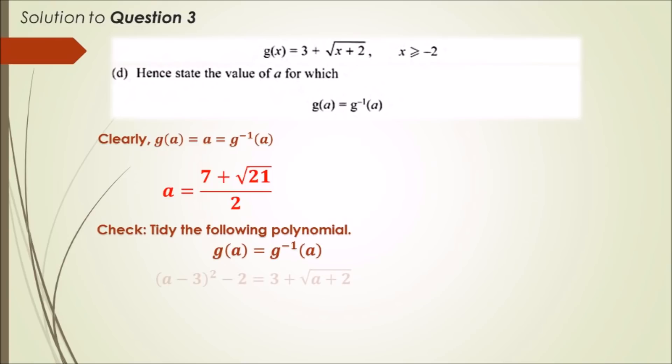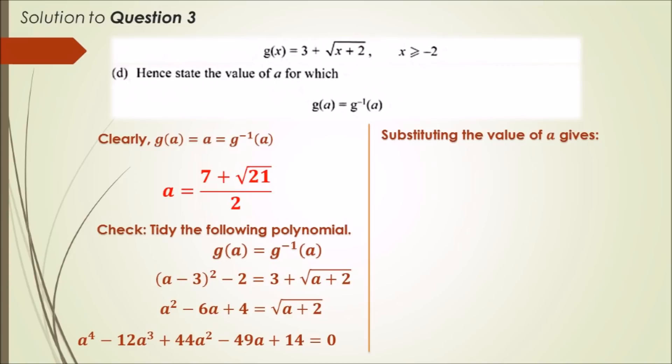And then, expanding and rewriting the function on the left and the right, you'd eventually get a fourth power polynomial. Now, you can't actually solve this directly without using an educated guess or knowing at least one of the solutions. Of course, we know the first solution would be a equals 7 plus root 21 over 2. And really, if you just substitute that in, then you're gonna get a nice lovely zero.